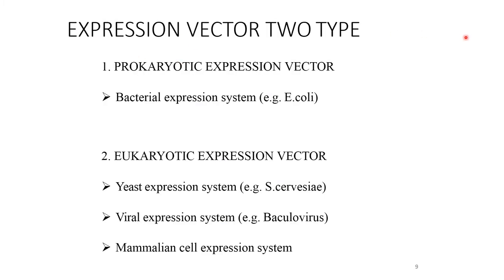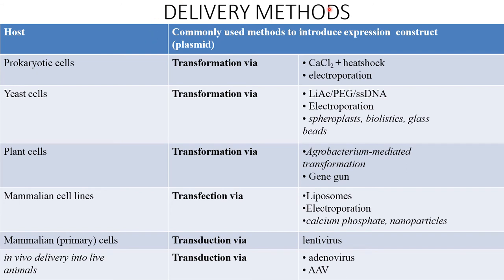Expression vectors are of two types: prokaryotic expression vectors and eukaryotic expression vectors. Examples of prokaryotic expression vectors include bacterial expression vectors such as E. coli. For eukaryotic expression vectors, examples include yeast expression vectors, viral expression systems such as baculovirus, yeast expression vectors such as Saccharomyces cerevisiae, and mammalian cell expression systems.